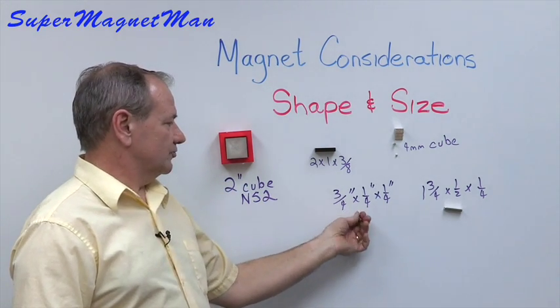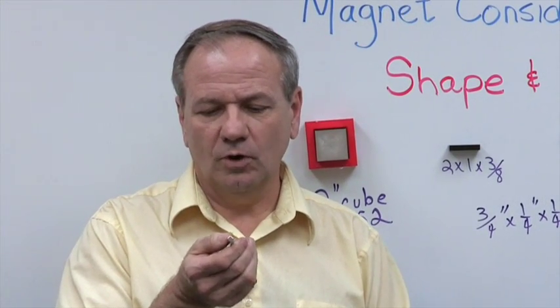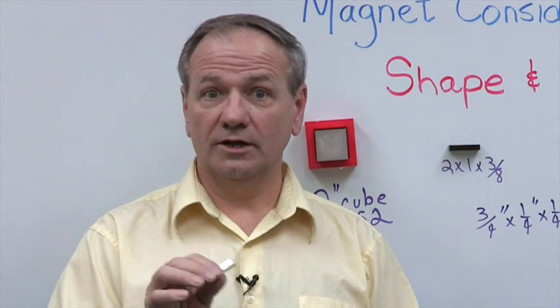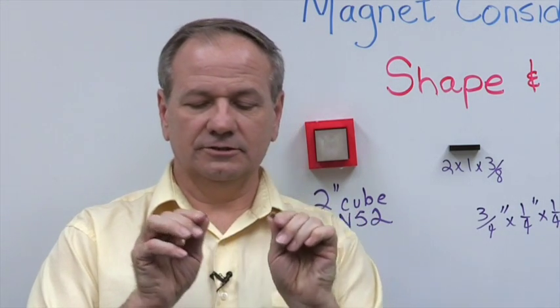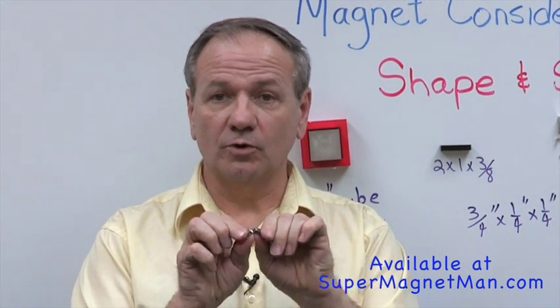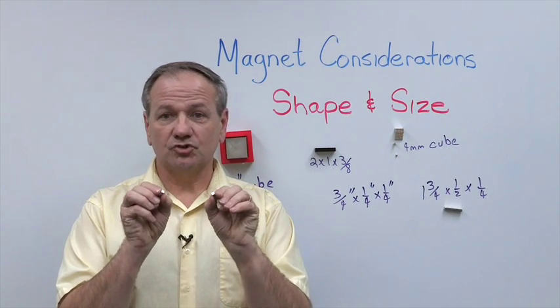The first one is three quarters of an inch long and a quarter of an inch square. It's a very common magnet and you can get these magnetized in one of two ways. One is through the length. Now let's take a look at what that does for us. We only have one fourth of an inch square facing each other, so if we're going to hold something, really all we have working for us is one fourth of an inch square.